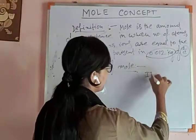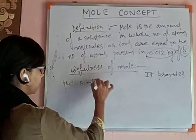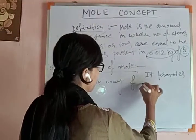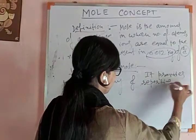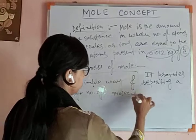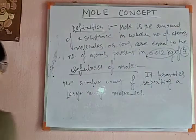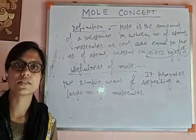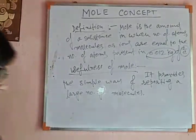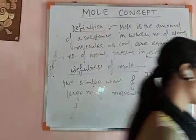The usefulness of mole is that it provides a simple way of reporting a large number of molecules. As a conclusion, we can write that mole is the counting unit that is used in chemistry. Mole is actually the counting unit.